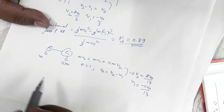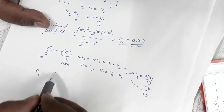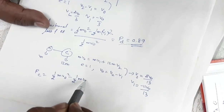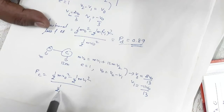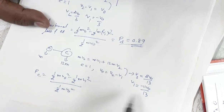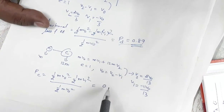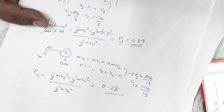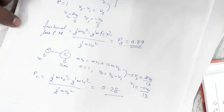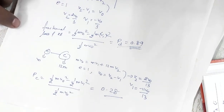The fractional loss of kinetic energy for neutron-carbon is (½mv₀² - ½mv₁²) / (½mv₀²), with v₁ = -11v₀/13. Substituting, pc comes out to be 0.28. This confirms that option 4 is the correct answer for question number 71.